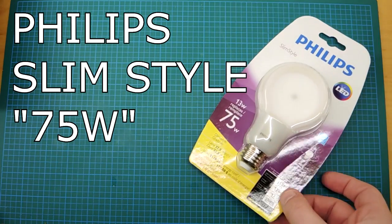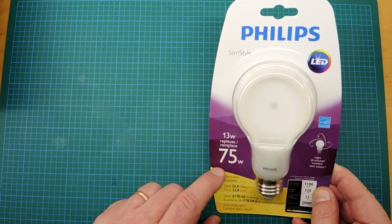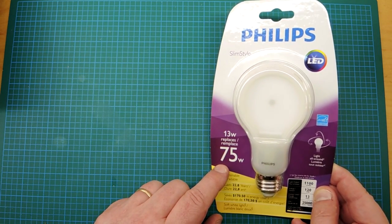Review time. This is the Philips Slim Style bulb. Now I reviewed the 60 watt equivalency quite some time ago. This is a new one, 75 watts.